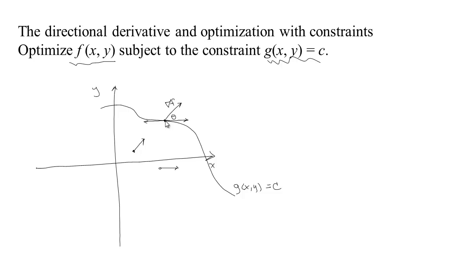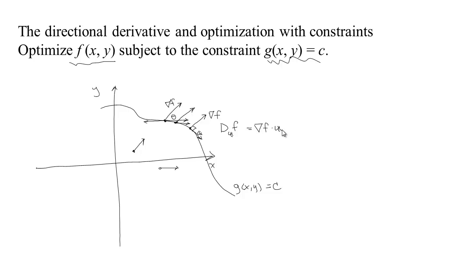As long as you can move in a direction at least partially aligned with the gradient, you can increase f. You keep moving along the curve until you reach a point where the gradient of f is perpendicular to the tangent of the curve. At that point the directional derivative — gradient of f dotted with the tangent unit vector u — equals zero. You cannot get any increase, so you must have reached an optimal point.